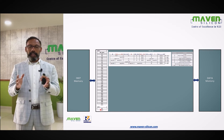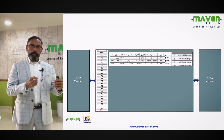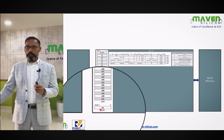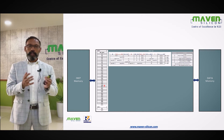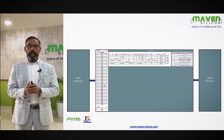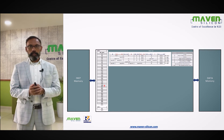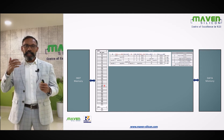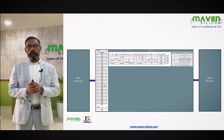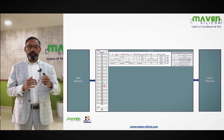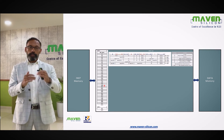RISC-V ISA is a load-store architecture. What it means is that whatever instructions the processor executes, everything will be executed using the registers. Overall, there are 32 registers. All the values like operands and intermediate values can be stored within registers and executed efficiently. If it has to deal with external memory, it does explicit read and write through instructions called load and store. That's why it's called load-store architecture. The important thing is RISC-V has enough registers — 32 registers — and during execution the RISC-V processor does everything with the help of registers.